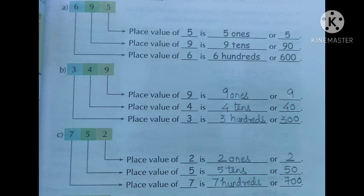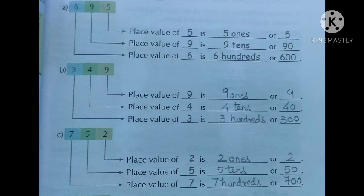Then, six is in the place of hundreds. So we can say there are six hundreds, or six double zero, that is six hundred. Then comes the second number: three hundred and forty-nine. We will start from the back. Nine is in the place of ones, so we can say nine ones or just nine. Four is in the place of tens, so we will say four tens or forty. Three is in the place of hundreds, so we will say three hundreds, or three double zero, that is three hundred.